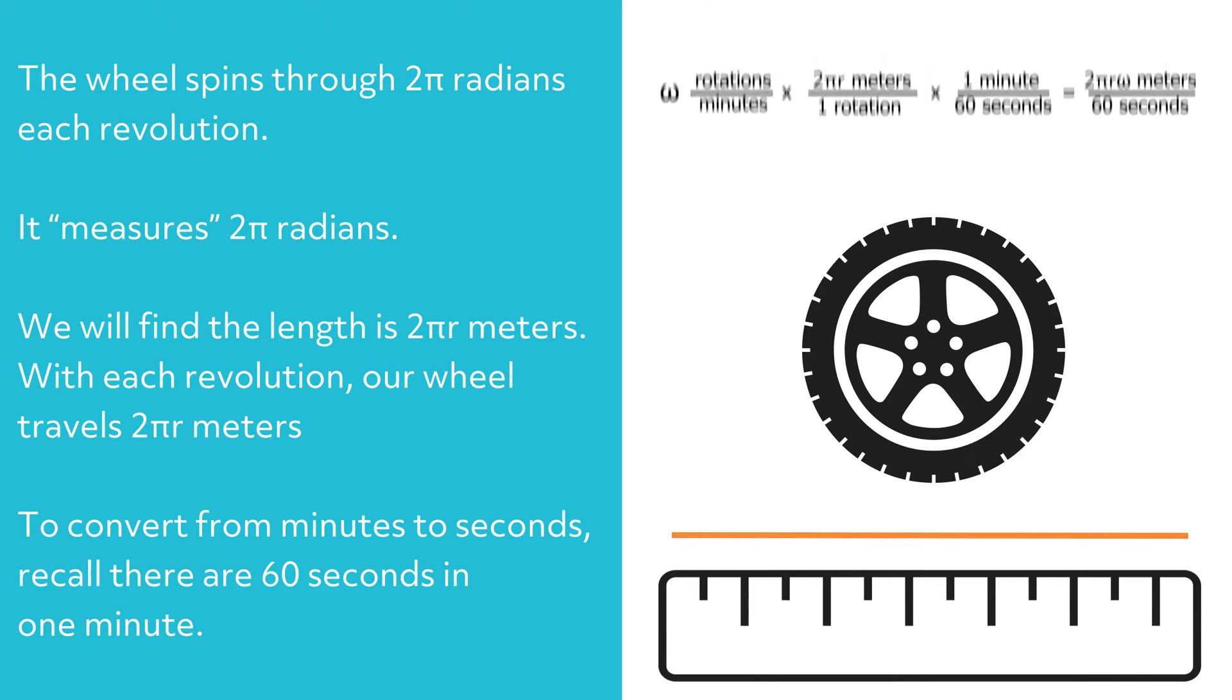So, we see omega rotations per minute times 2 pi r meters per 1 rotation times 1 minute per 60 seconds equals 2 pi r omega over 60 meters per second.